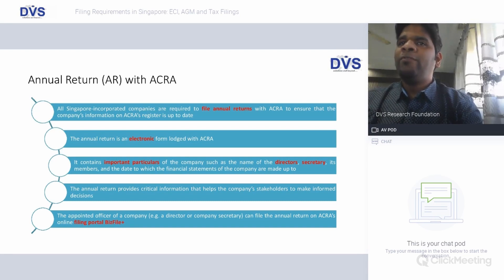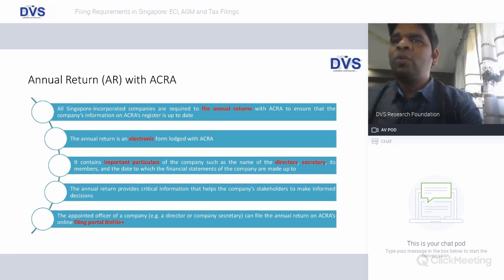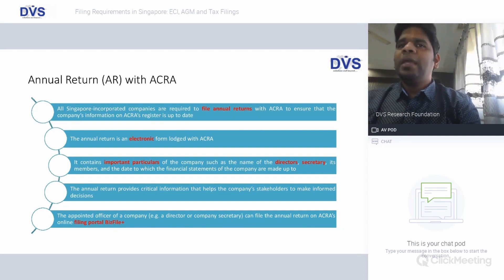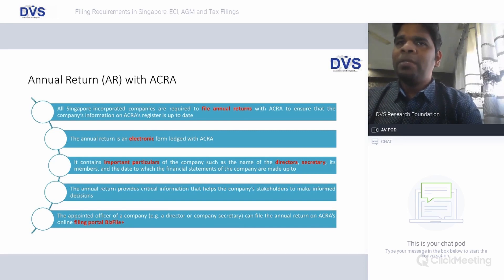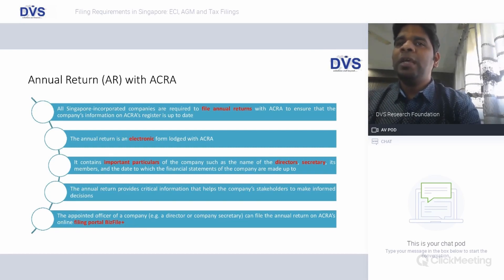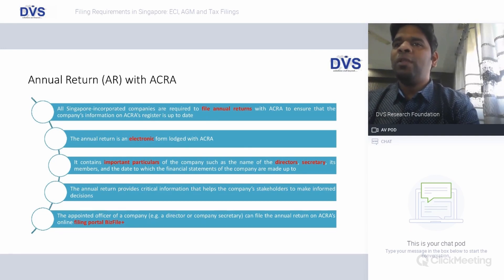The annual return is electronically lodged with ACRA through BizFile, which helps upload documents and complete e-filing. This is logged in through the company secretary's or local director's SingPass account, which provides access to the government portal. The annual return contains important particulars such as the names of directors, secretary, and members, and the date to which the financial statements are made up. It provides critical information that helps the company's stakeholders make informed decisions, and the appointed officer — secretary or director — can file the annual return online through BizFile.